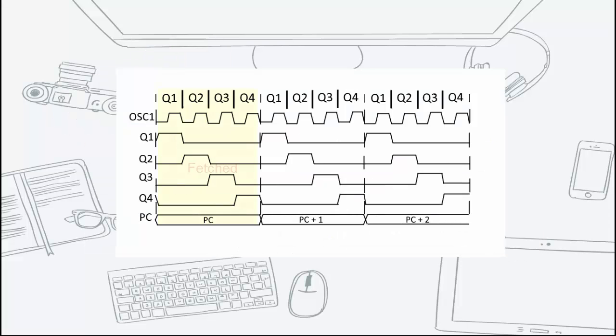In the first instruction cycle, the microcontroller fetches the instruction from the memory and then the fetched instruction will be executed on the next cycle.